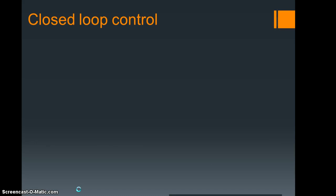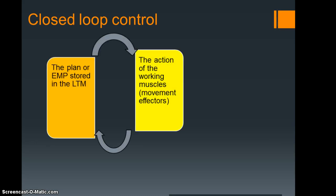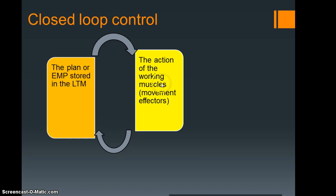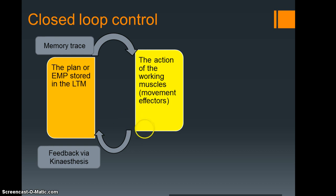Moving on, we have closed loop control. This one is slightly different. We still have our executive motor program stored in long-term memory. We still have the memory trace that goes into our working muscles, the movement effectors. But what we get this time, because the loop is slightly longer, is an opportunity for some kind of feedback. And this is through kinesthesis, our sense or feel of the actual skill. This is known as our perceptual trace—we perceive what it feels like.